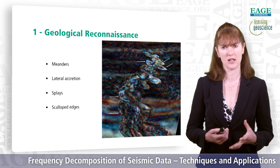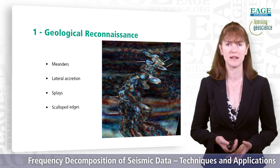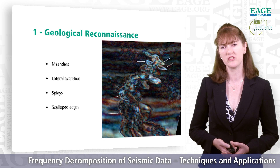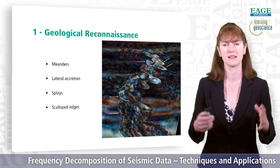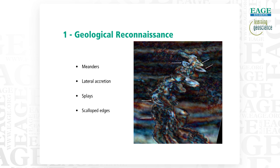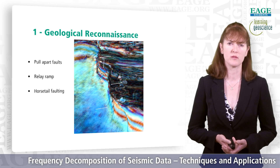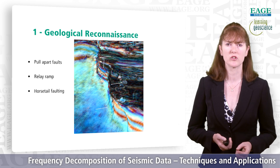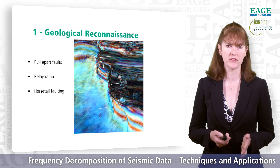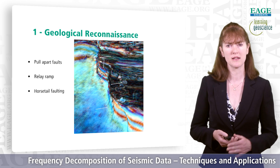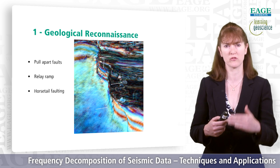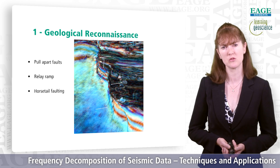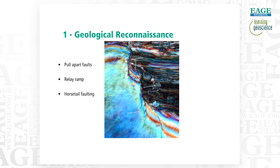On the bottom right-hand side, we have a complex channel system. Quite easily we can see the meander loops, areas of lateral accretion, splays coming in, and scalloped edges toward the bottom indicating slumping. Moving to the center of the image, we can see very strong faults coming through — some large faults and pull-apart zones. Where we have the abrupt change in frequency response, that's where there's a big throw across the fault. Where we can see layering between the faults, that's where the relay ramps are coming down heading from north to south, and we can see horsetail faulting at the bottom associated with those main pull-apart faults.